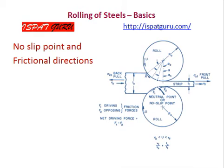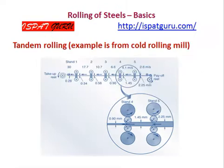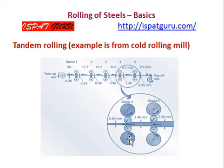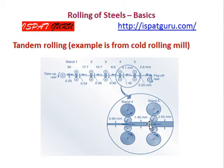Here, a tandem rolling image is shown where the strip is rolled in five continuous stands. The example is taken from a tandem mill, and one can see the data roll and the pay-off reel. Four high mills are present, and rolling is being performed in the fourth and fifth stands.